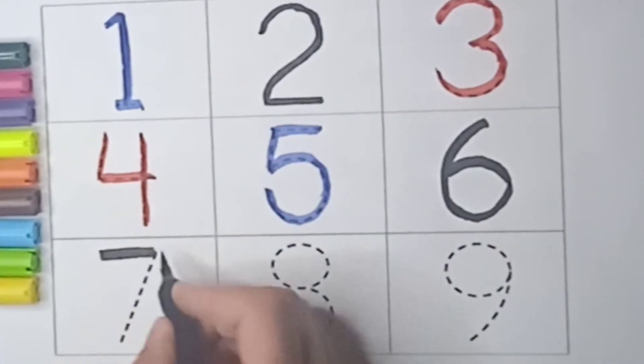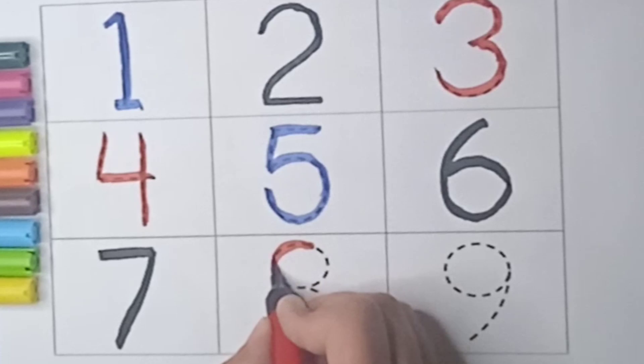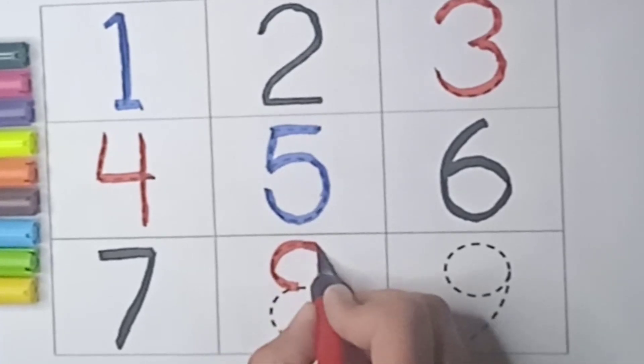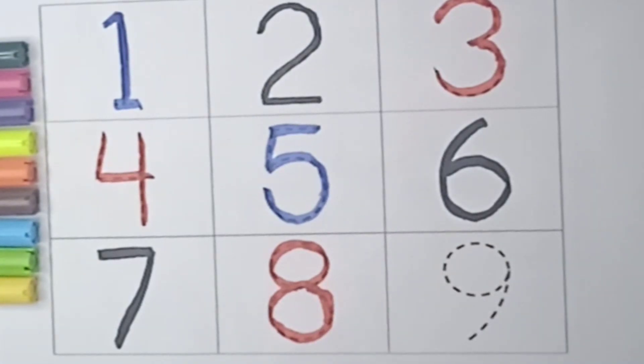Next is 7, black color. First we will write sleeping line and slanting line. 7. Say 7. Red color, make a curve. Look at this, it's a small circle and one more circle. It's 8, number 8.